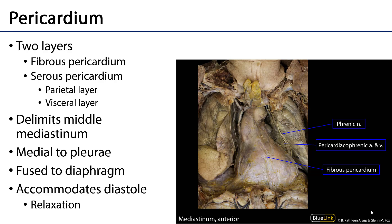The outermost layer, which we can see here, is the fibrous pericardium. Deep to the fibrous pericardium is a mesothelial membrane called the serous pericardium, which has a parietal layer and a visceral layer. From what you understand about mesothelial membranes, the parietal layer tends to adhere to the walls, and the visceral layer adheres to the viscera.